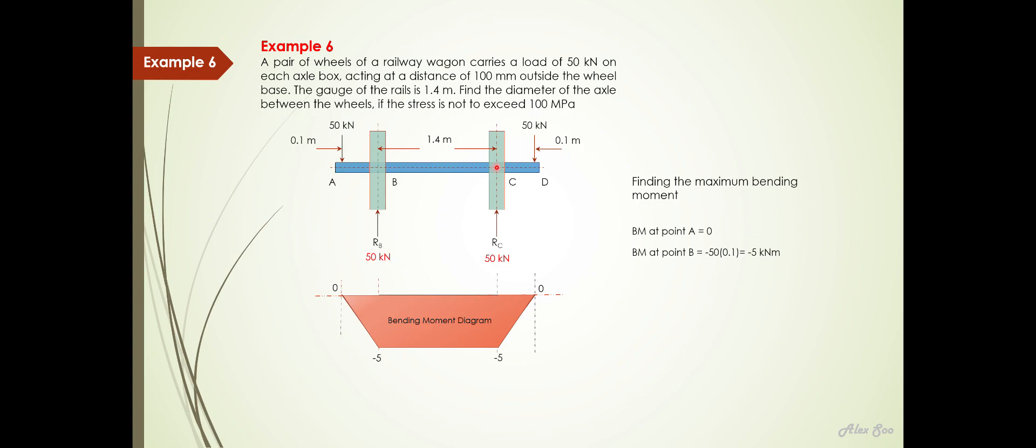So that is why it's a positive sign and this is a negative sign because this will cause the shaft to bend downwards and this will cause the shaft to bend upwards. So that is why when you take the moment about this point here, you have positive 50 times 1.4.